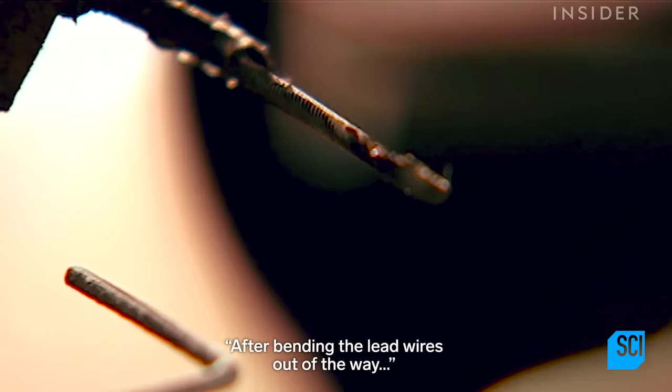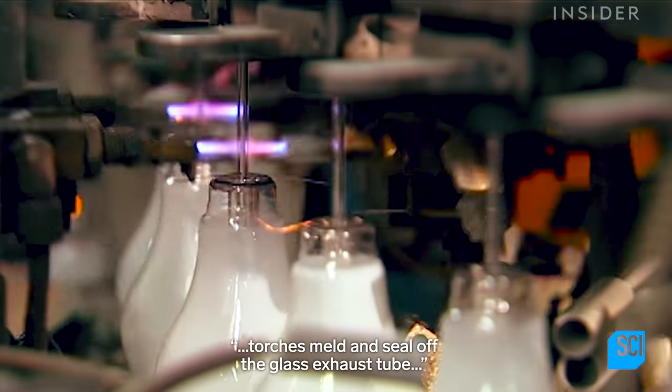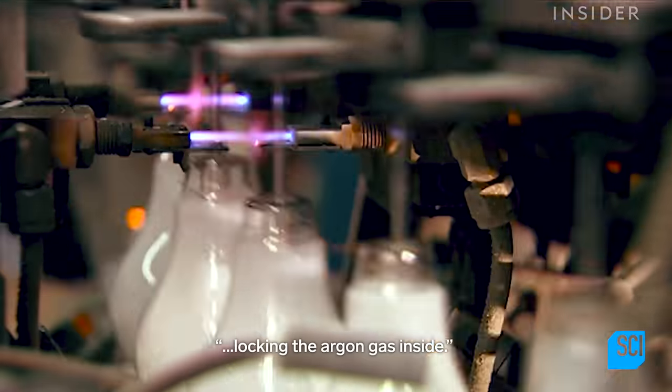After bending the lead wires out of the way, torches melt and seal off the glass exhaust tube, locking the argon gas inside.